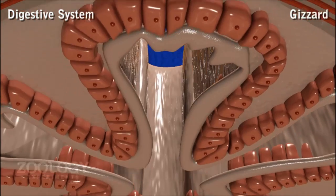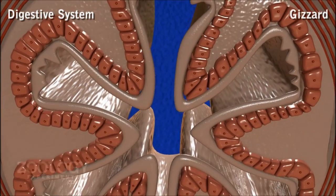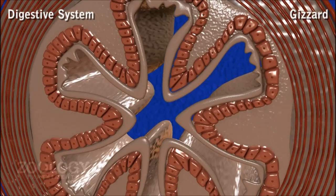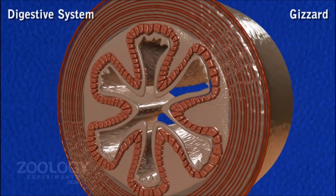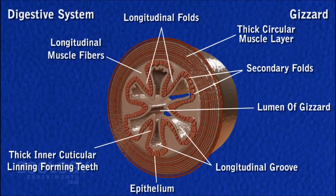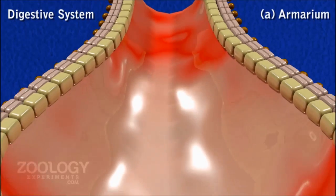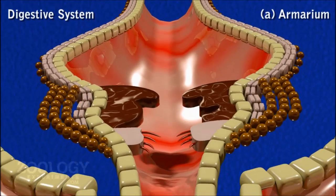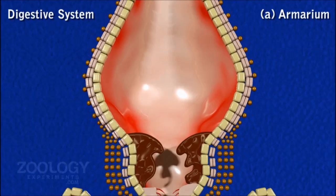Gizzard. The crop leads behind into a small, cone-shaped, muscular, and thick-walled chamber called the gizzard. It consists of two parts: an anterior armarium and a posterior stomodial valve. The armarium possesses internally six longitudinal folds that greatly reduce its lumen.